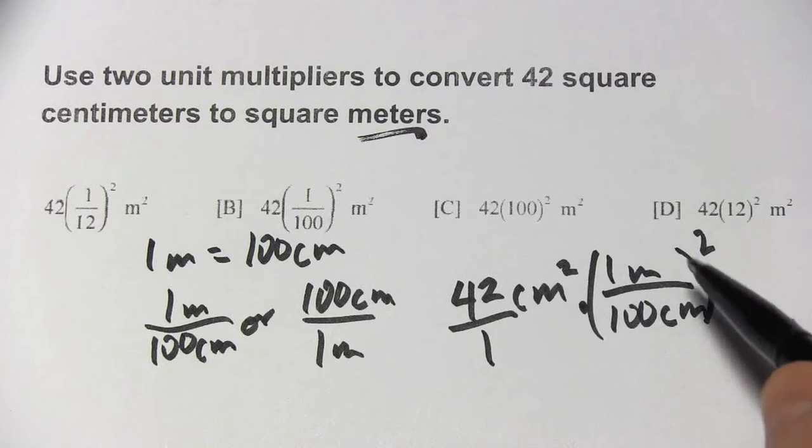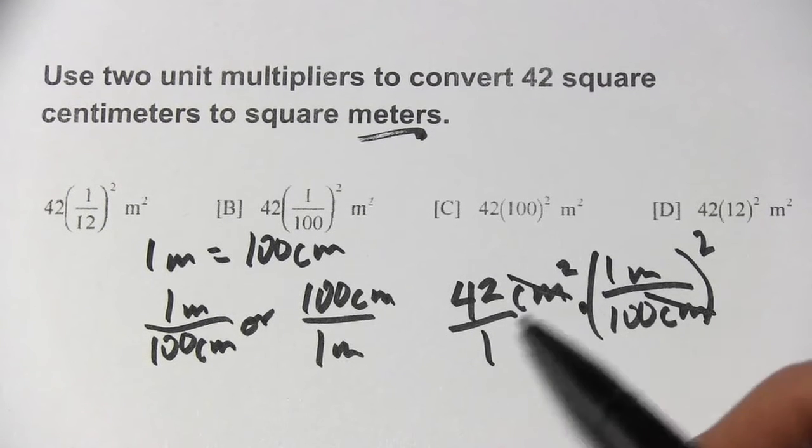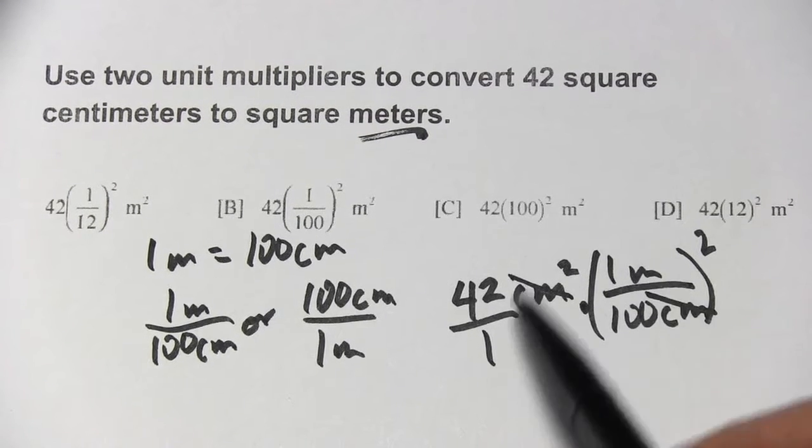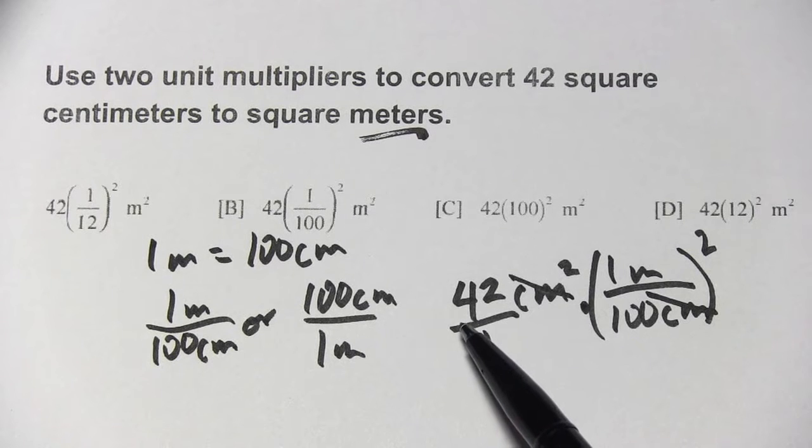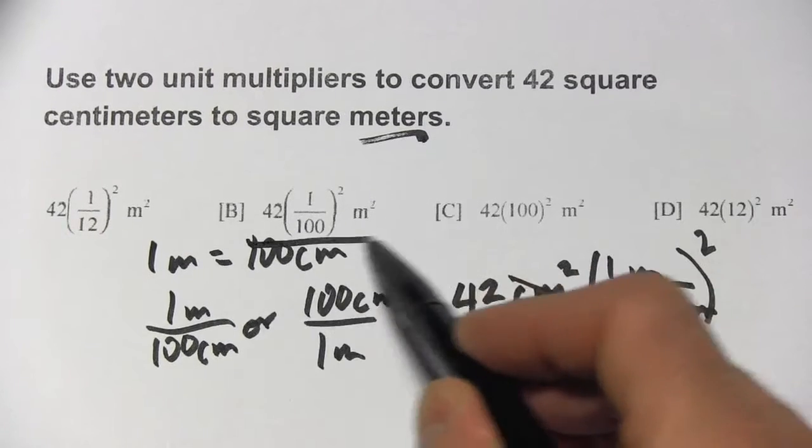Now the centimeters squared will cancel with the centimeters squared down here. So those units cancel. I end up in meters squared, and this is my whole problem. It's 42 times 1 over 100 squared, which would be this one right here.